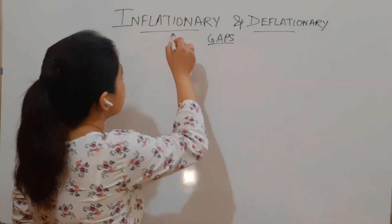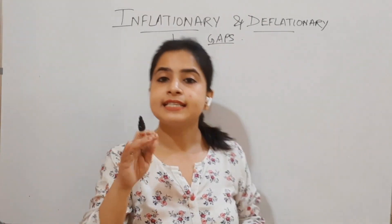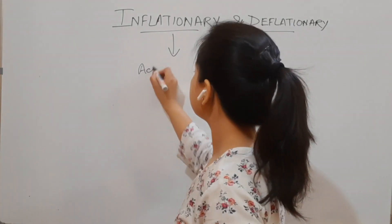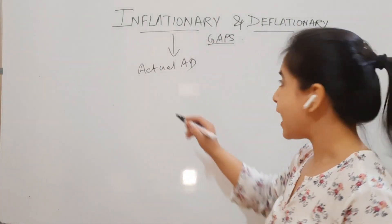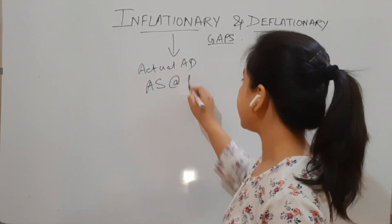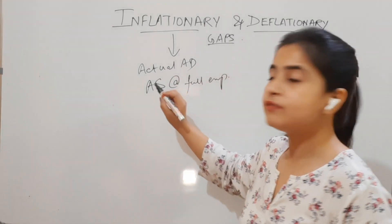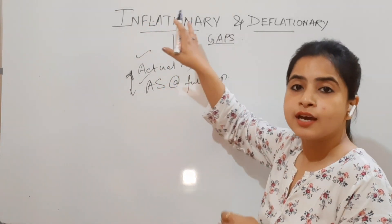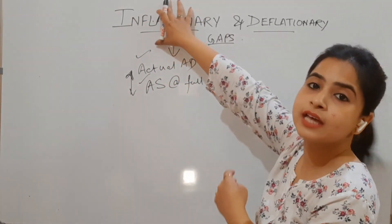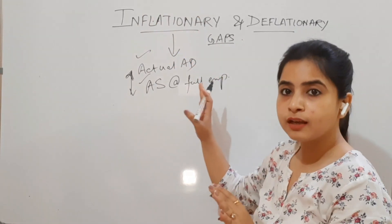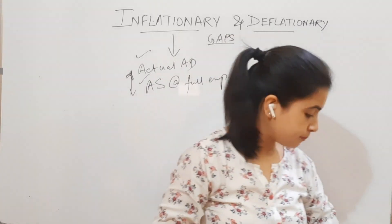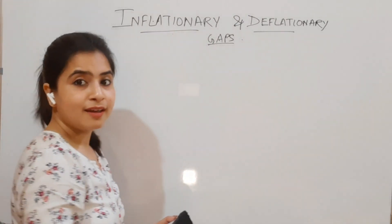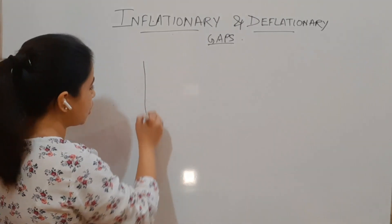Starting with the inflationary gap — this gap is talking about the gap between the actual aggregate demand and the aggregate supply at the full employment level. If there is this gap between these two, it is defined with the help of the inflationary gap. Let me take the help of some diagrams, because the definition will be easier to remember that way.